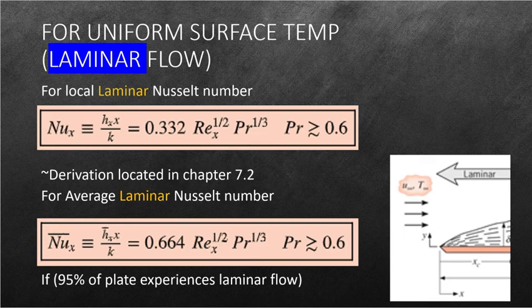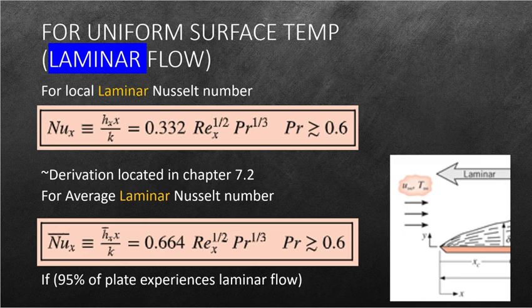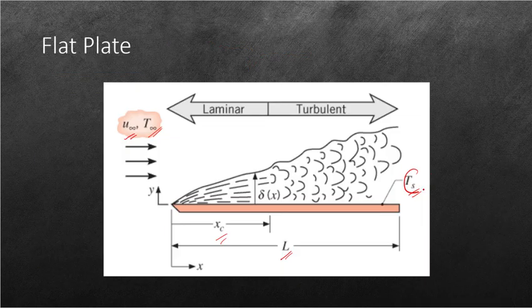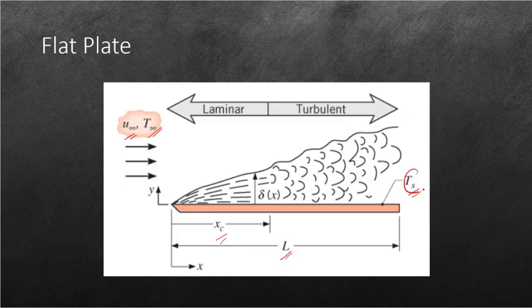So let's begin first. Now the empirical formulas require a lot of assumptions. One of the assumptions is to have uniform surface temperature. Now what this means is that the surface temperature here, this TS, is assumed to be constant across the whole length of the plate.